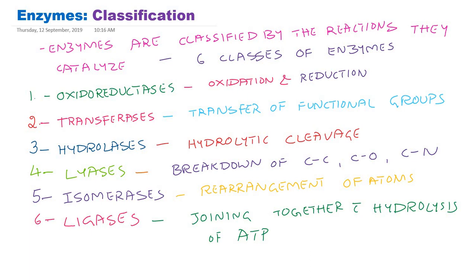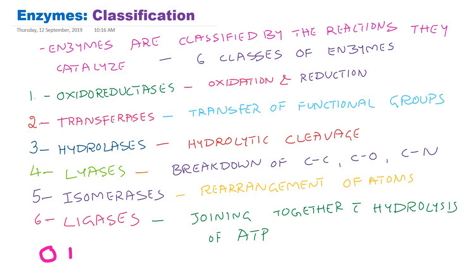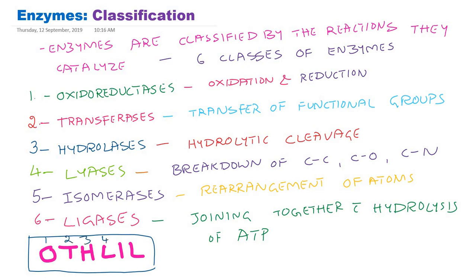So these are the six classes of enzymes. When writing the six classes you should not interchange them — class 1 must always be oxidoreductase, class 4 must always be lyases, and class 6 must always be ligases. You must always start with oxidoreductases. There is a mnemonic to remember this classification: OTH LIL — in order: O for oxidoreductase (class 1), T for transferases (class 2), H for hydrolases (class 3), L for lyases (class 4), I for isomerases (class 5), and L for ligases (class 6). I will make separate videos with examples for each class.